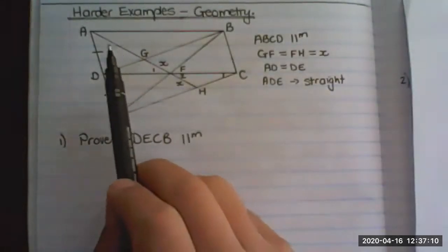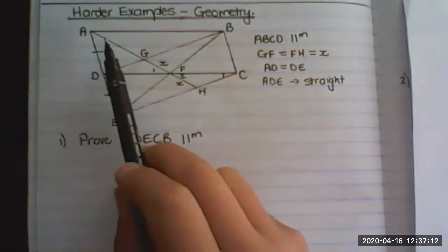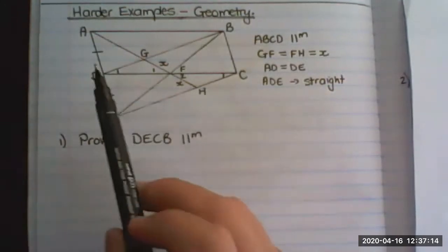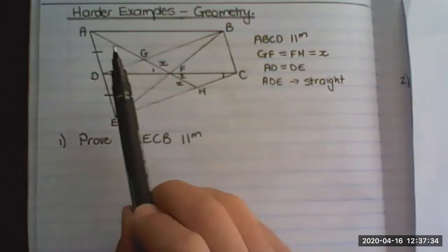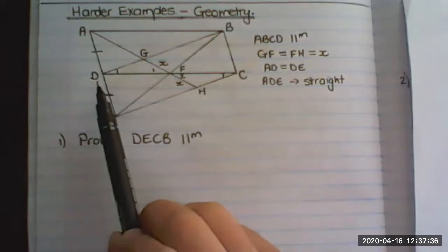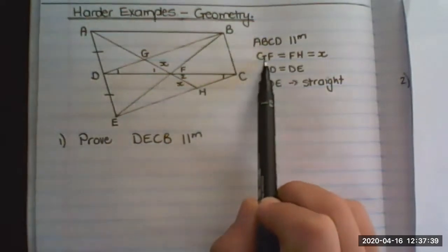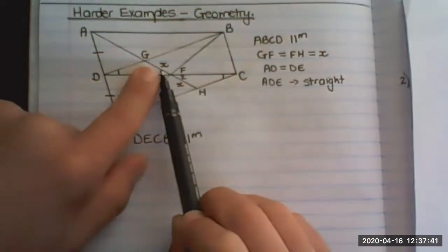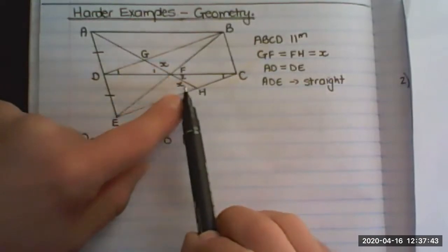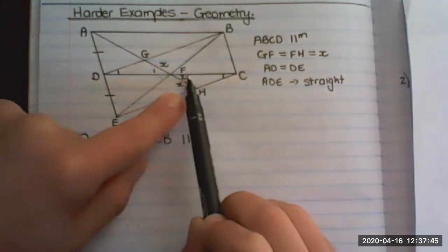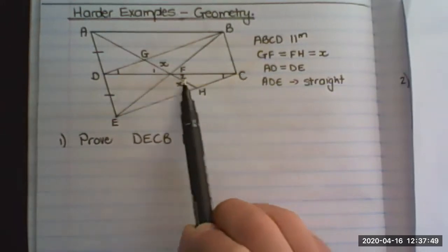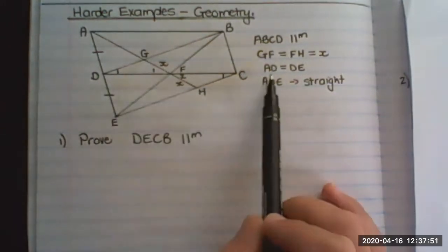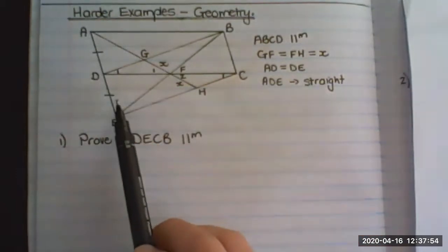In this example we are presented with a multi-sided diagram. We have A, B, C, D, and E on the outside. ABCD is a parallelogram, that is given. Line GF is equal to x and FH is equal to x. That number there is a 2 and that's the number 1, just marking all of the angles. They say ADE is a straight line.